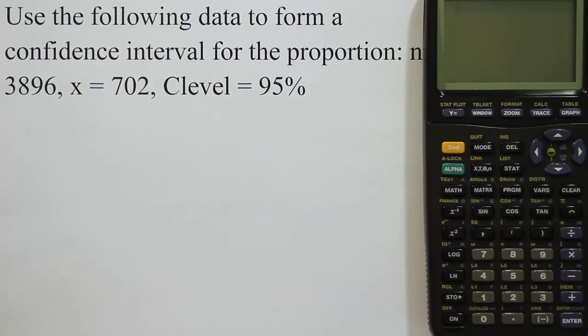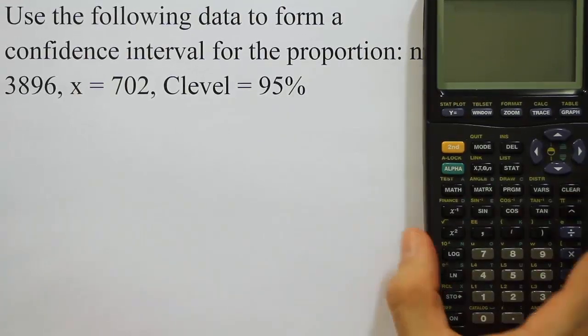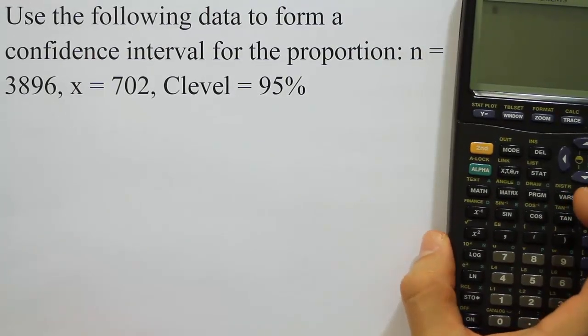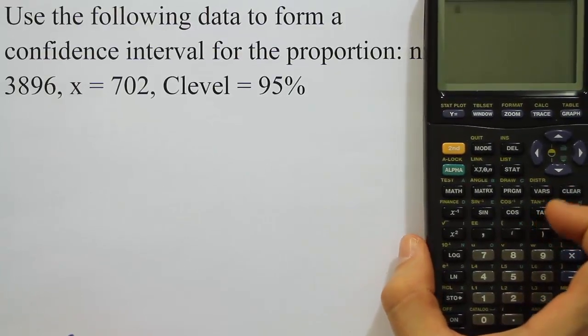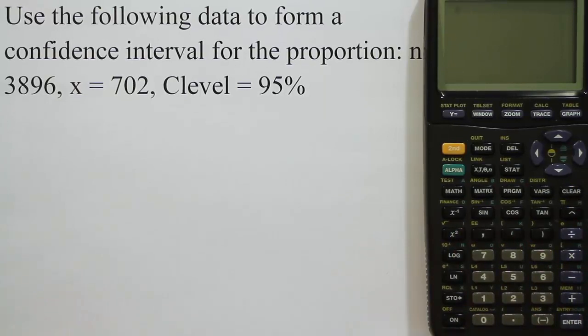Okay, so let's go ahead and do that. It tells us that our n value is actually equal to 3,896. We have the x value. We have a confidence level. Let's go ahead and enter that stuff in our calculator then.